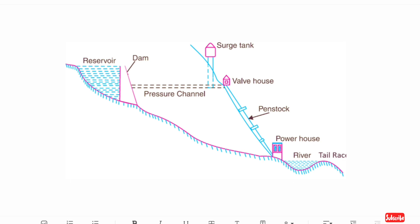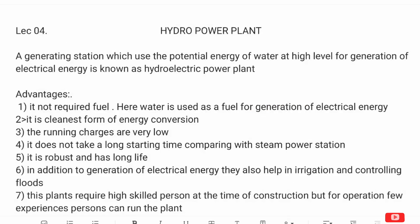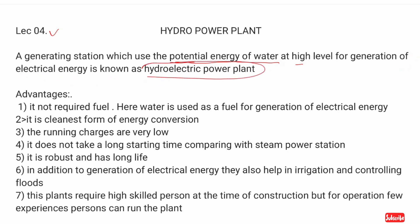A hydroelectric power plant is a generating station which uses the potential energy of water at a high level. The potential energy of water stored at a high place is converted to generate electrical energy. This type of station is known as a hydroelectric power plant.